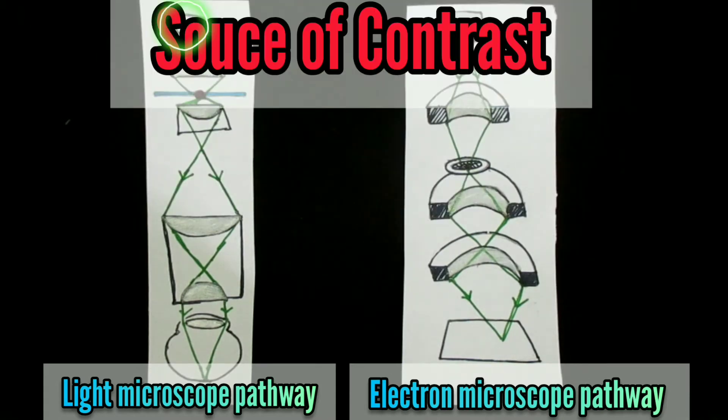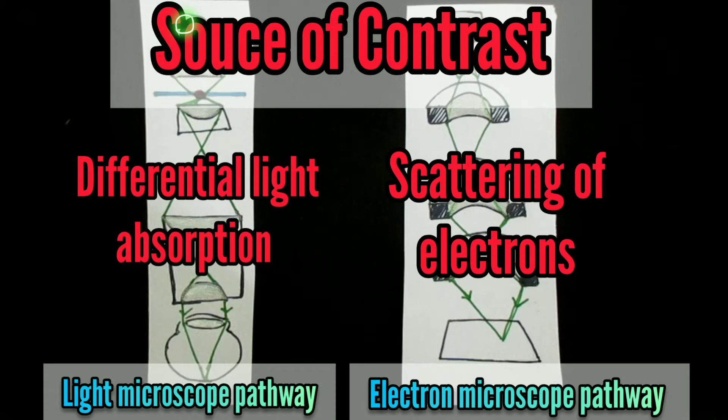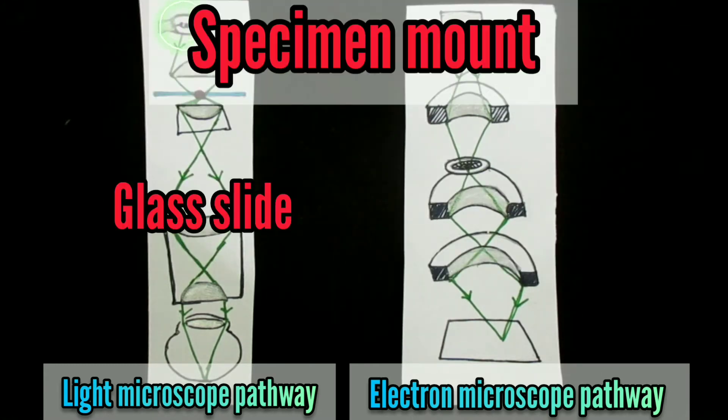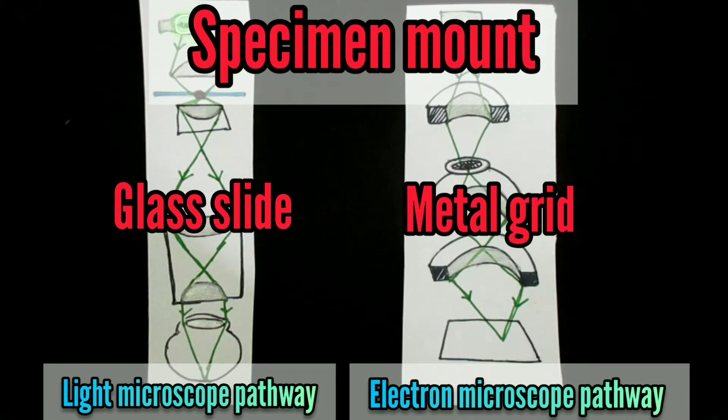The source of contrast is differential light absorption in light microscopy and the scattering of electrons is used as the source of contrast in electron microscopy. The specimens are mounted on glass slides and the metal grid, usually copper, is used in electron microscopes.